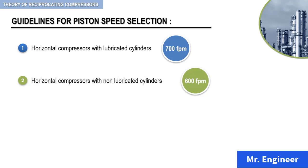For vertical compressors with lubricated cylinders, you can use 800 feet per minute.